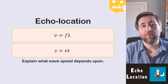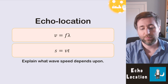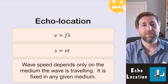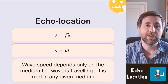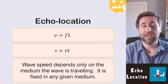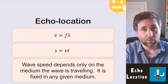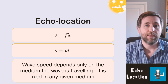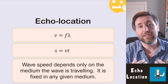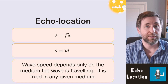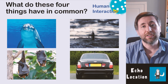Lastly, what does wave speed depend upon? Wave speed only depends on the medium the wave is traveling in. The speed of sound is always the same in air, always the same in water, always the same in a solid. Because we know the wave speed, we can use time to work out distances — that's the principle of echolocation.